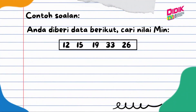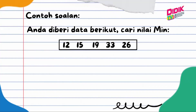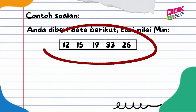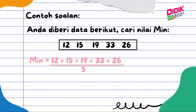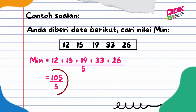Anda diberi lima nombor, iaitu 12, 15, 19, 33 dan 26. Jumlahkan kesemua nombor tadi, iaitu 12 + 15 + 19 + 33 + 26 bersamaan dengan 105. Jumlah 105 dibahagikan dengan 5. Kenapa 5? Kerana anda diberi lima nombor. Jadi, 105 dibahagi dengan 5, maka jawapannya ialah 21.